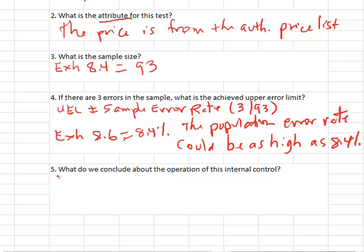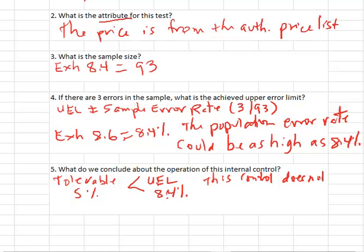So what do we conclude about the operation of the control? Well, the auditing standards say you compare the tolerable rate you started testing with, for us in this problem 5% errors, with the upper error limit projection from your tests, for us 8.4% errors. So clearly, the population could have a failure rate higher than we said we could tolerate. So the conclusion is, this control does not operate as designed. We cannot rely on this control in the rest of our audit testing.